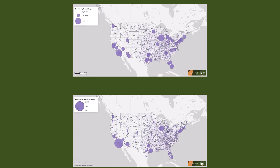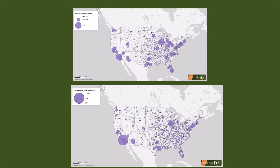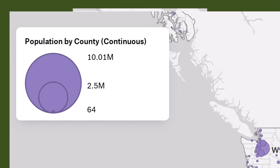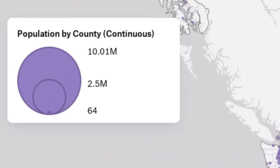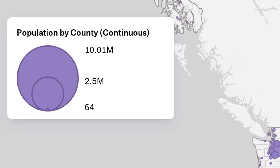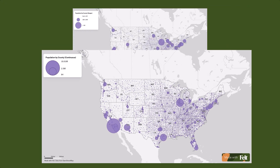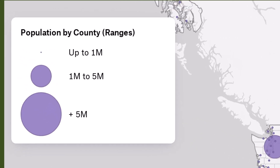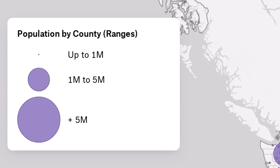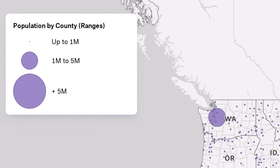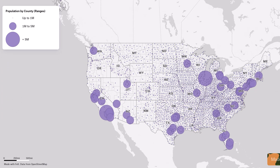These maps utilize the same dataset to represent the two types. First, with continuous scaling, the size of each circle on the map is scaled proportionately to its value in the data. This means that larger circles represent higher values, offering a direct visual comparison between individual data points. On the other hand, with ranges, the values are broken into groups, typically between 3 to 5, where symbols are sized based on the group they fall into. This is similar to the choropleth technique used for polygon data.